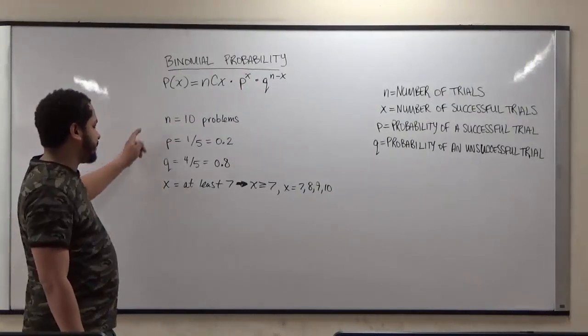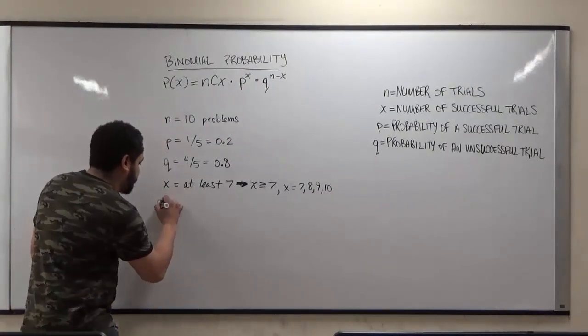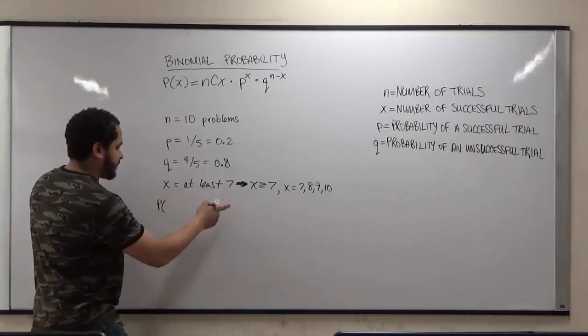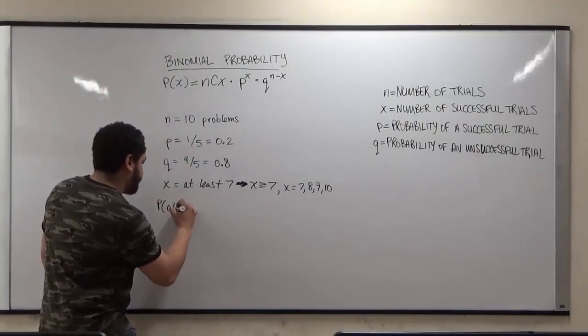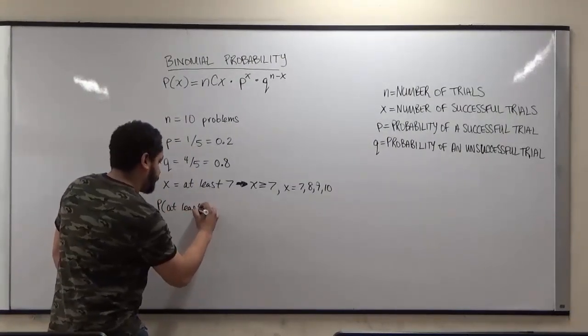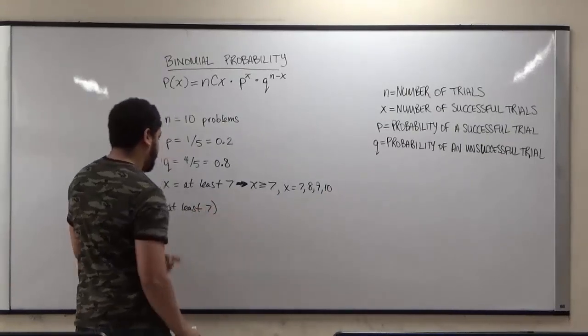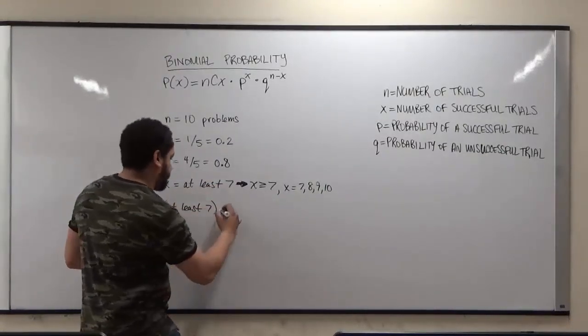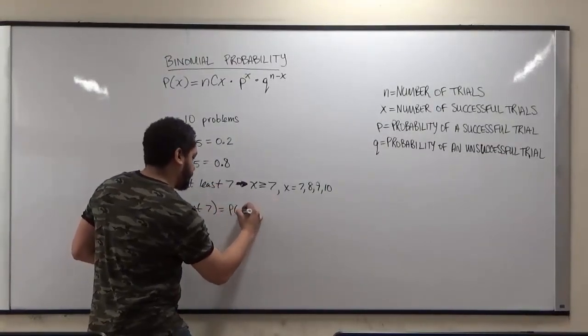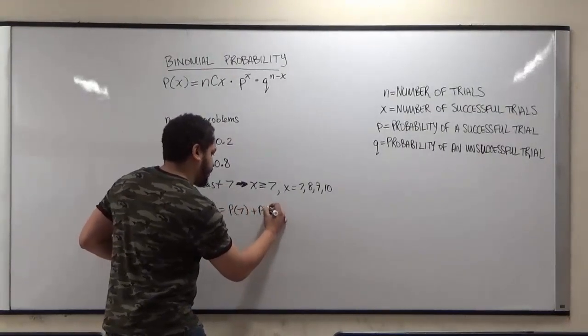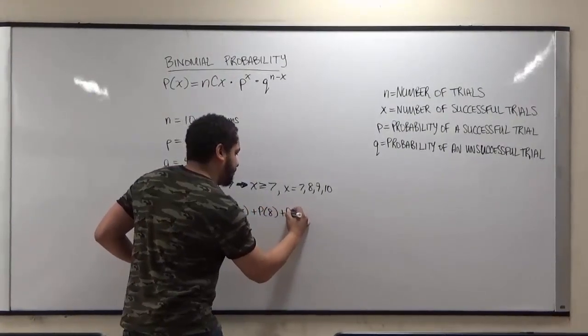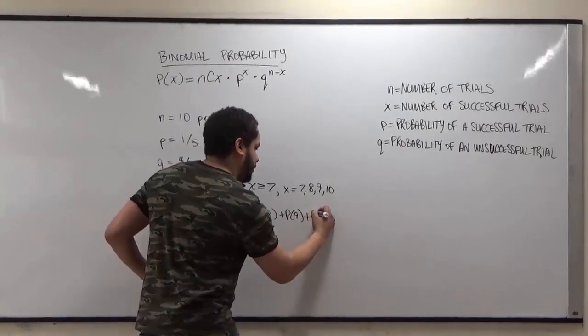the specific events to complete this probability, because we're looking for the probability of getting at least a 70, which is 7 problems correct. And the x would be 7, 8, 9, and 10. So we're summing up the probability of 7, plus the probability of 8, plus the probability of 9, plus the probability of 10.